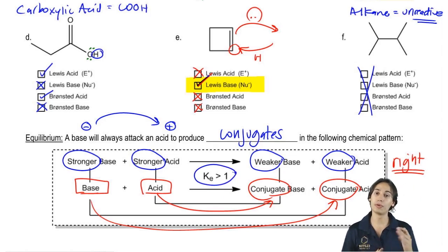And then also the Ke has to do with the equilibrium constant and all that's saying is that it's always going to go to the right. Basically Ke over 1 means that it's going to the right if your conjugates are weaker. If your conjugates are stronger, then it would go to the left because then it's going to go the other way.